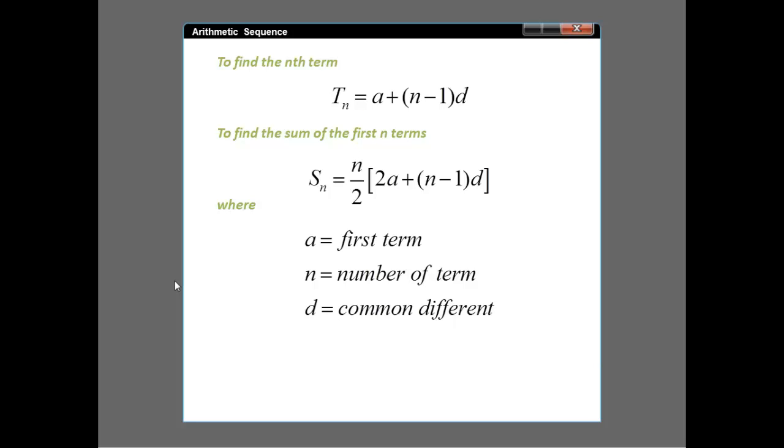To find the nth term: Tn = a + (n-1)d. To find the sum of the first n terms: Sn = n/2[2a + (n-1)d], where a is the first term, n is the number of terms, and d is the common difference.